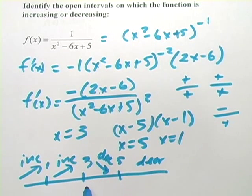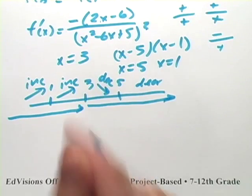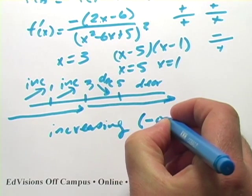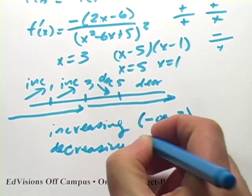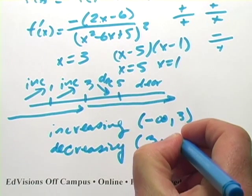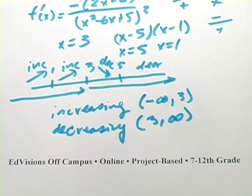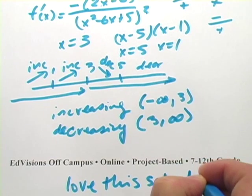So what we found is that it's decreasing from 3 on up, and it's increasing from negative infinity up to 3. We can write that in interval notation: it's increasing on the interval of negative infinity to 3, and it's decreasing on the interval of 3 to infinity. So that is a little bit of work with finding the intervals of increase and decrease on functions. My name is Larry. I'm a teacher at EdVisions Off Campus, an online project-based school in Minnesota. You can find us on the web at lovethisschool.org.